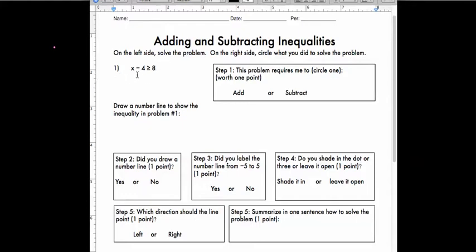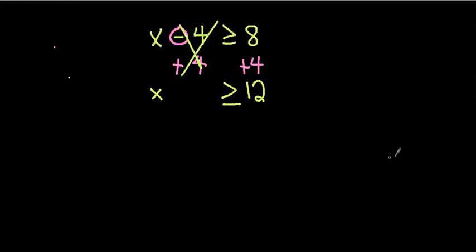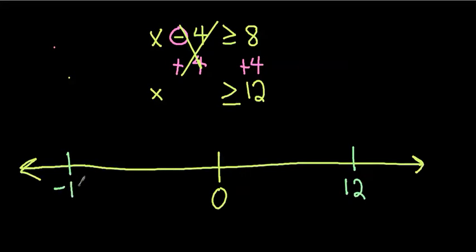So here is the problem — let's draw a number line. You would draw a number line in your space like this, with 0 somewhere in the middle. Let's say over here is 12, and we'll also do negative 12. Then we have to draw in our inequality. Our answer is x is greater than or equal to 12, so we draw a circle at 12.